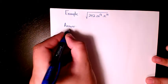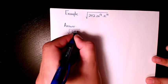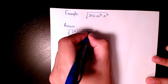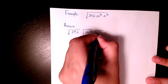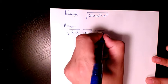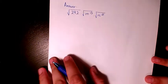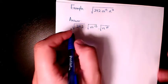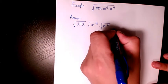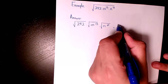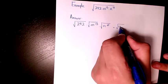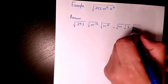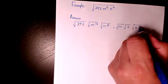I write it as the square root of 242 times m to the power of 13 times n to the power of 21. Then I change 242 to 121 times 2. M to the power of 13 is going to be m to the power of 12 times m.